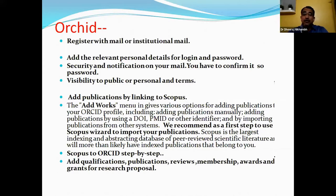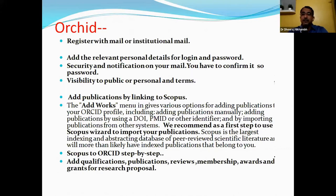Linking with Scopus is the most important thing. Scopus is a large indexing database, so it is more useful for the author — you can link directly from Scopus to ORCID. Then add relevant details such as qualification, publications, review membership, awards, grants, and research proposals. This is the difference between ORCID and Publons.